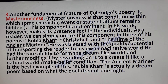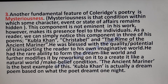As a reader, we can simply notice this component of mysteriousness in three of his poems: Kubla Khan, Christabel, and The Rime of the Ancient Mariner. He was blessed with the potential of transporting the reader to his own imaginative world. He had the rare ability to form a dreamlike world and then modify it — reworking it to create a natural or make-believe condition, changing the supernatural into the natural. The Ancient Mariner is the best example of this, whereas Kubla Khan is actually a dream poem based on what the poet dreamed one night.